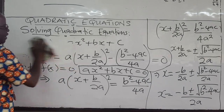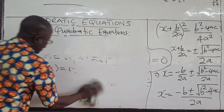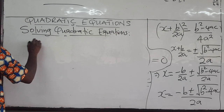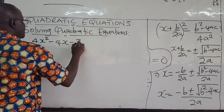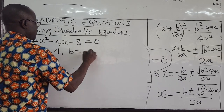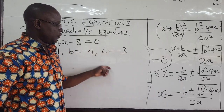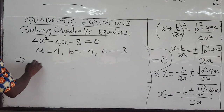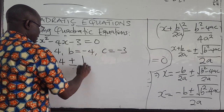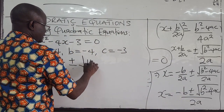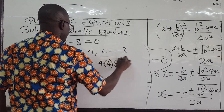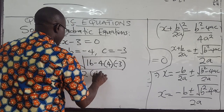For example, we can use this formula to solve the first equation we already solved. The equation was 4x² minus 4x minus 3 = 0. So in this case, a = 4, b = negative 4, and c = negative 3. All you do is plug them in: x = negative b = 4, plus or minus the square root of b² = (negative 4)² = 16, minus 4 times a = 4 times c = negative 3, all over 2 times a = 2 times 4.